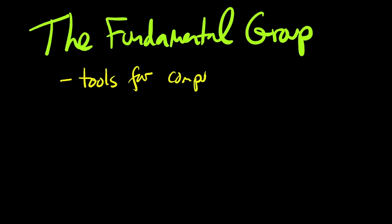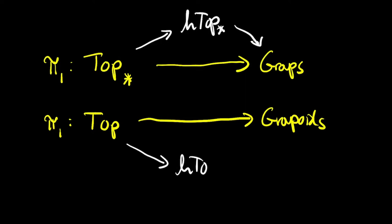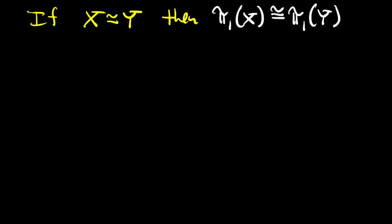When I talk about π₁, I think of two different functors: one from the category of pointed topological spaces to the category of groups that sends a space with a base point to the fundamental group based at that point, and the functor that sends an unpointed topological space to its fundamental groupoid. Both of these functors I'll denote by π₁, and they both factor through the homotopy category. So that gives you immediately one computational tool. Replace your space by something homotopy equivalent that's easier to compute π₁ of.